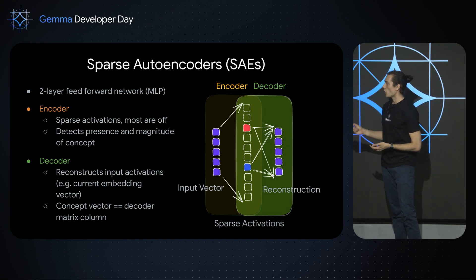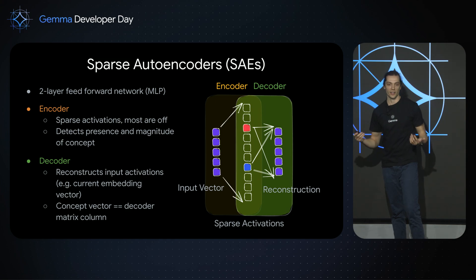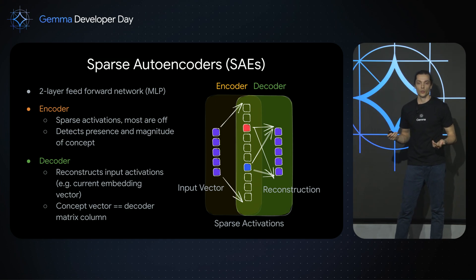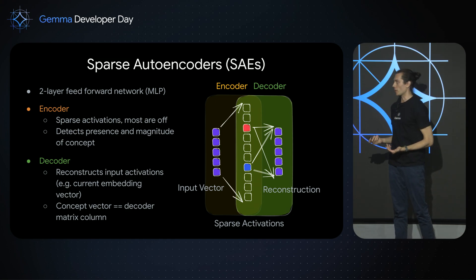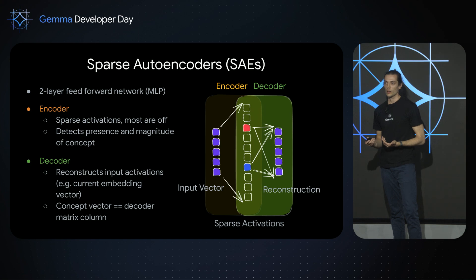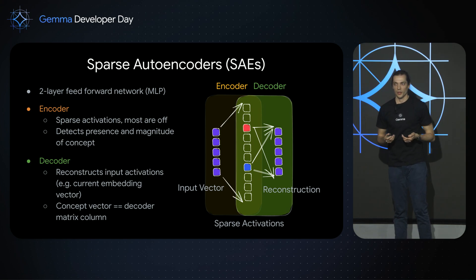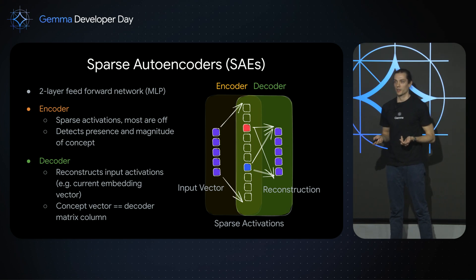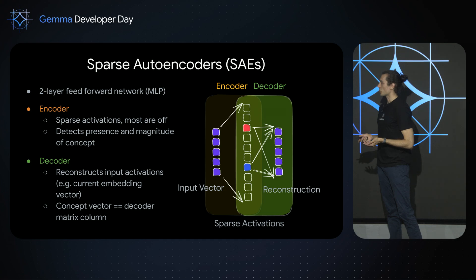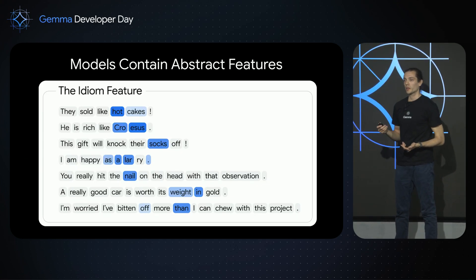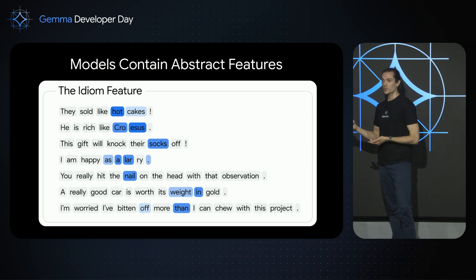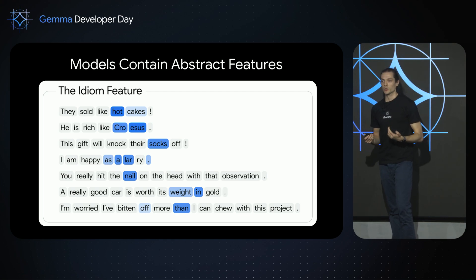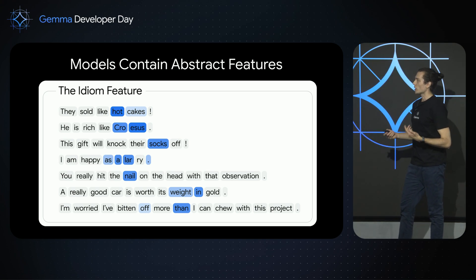It's very important to note that all of this works in a completely unsupervised fashion — we never tell the sparse autoencoder what kinds of concepts it should learn. You might wonder whether we can even find anything human-interpretable here, but empirically that's exactly what we're seeing. For example, inside GemmaScope we found a feature that activates on a whole range of English idioms, which means the language model must have some abstract internal conception of what an idiom is.